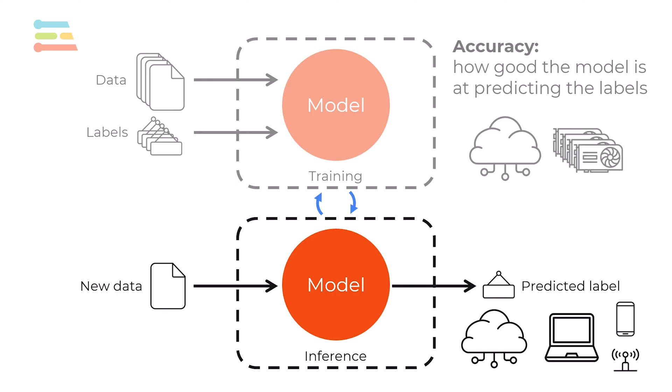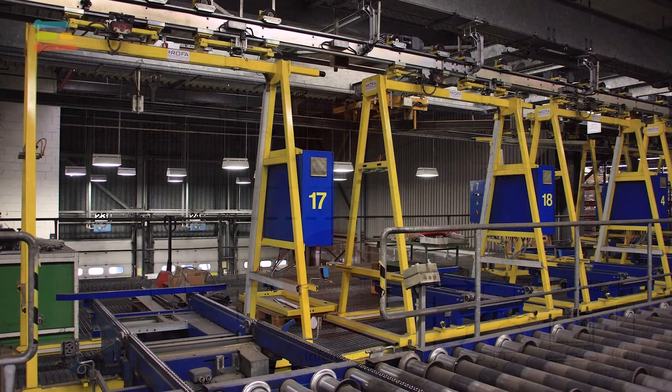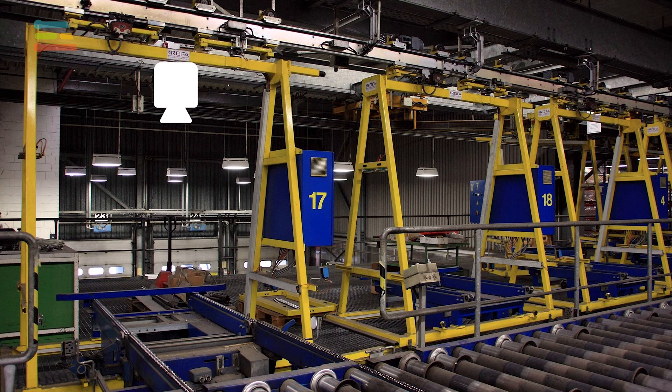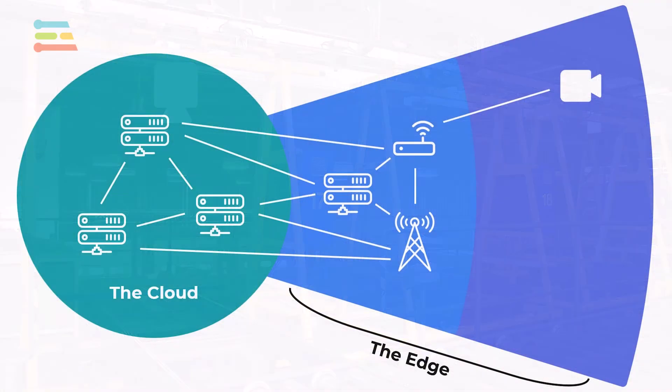Let's look at an example of where we might want to do that. Assume you run a factory. At the end of the assembly line, you want to install a camera for automated quality control. For example, you're looking for defects or other issues during production. With cloud-based AI, inference needs to be performed on large servers.